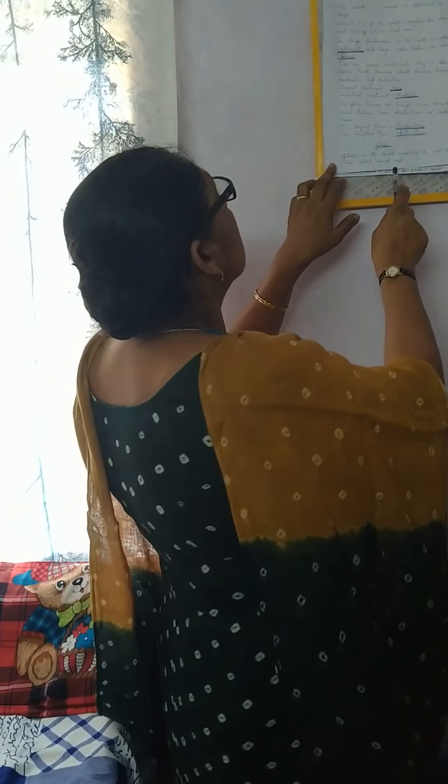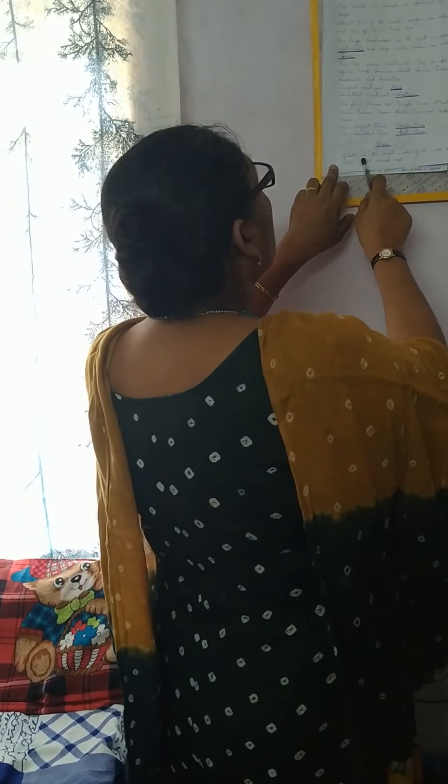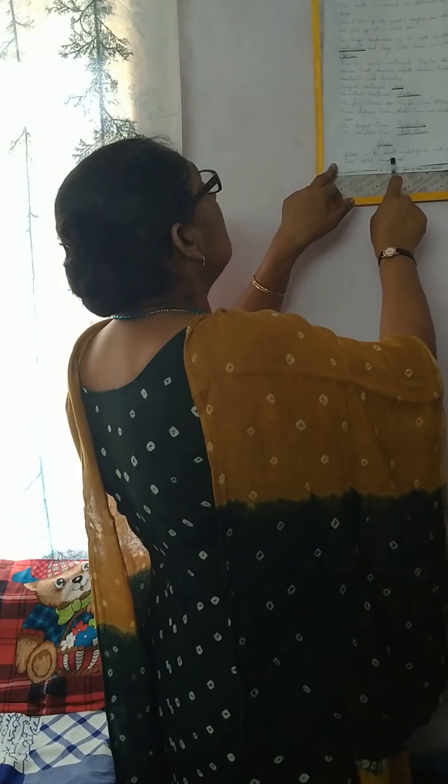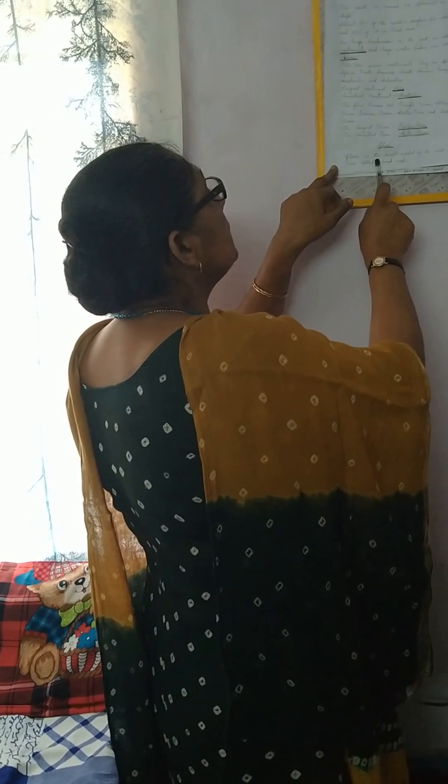Now we are going to learn about the globe. The globe is a small model of the earth — it is round in shape.